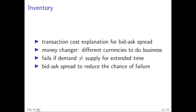Imagine a money changer. In order for him to function, he must have different currencies at hand. Suppose we want to exchange US dollars to euros — he must have both currencies to do business. However, he fails to fulfill his role if demand and supply are unequal for an extended period of time. For example, if many people are buying US dollars with euros, he will accumulate more euros and run out of US dollars, and then he cannot do business anymore. So the inventory model says the money changer would set the bid-ask spread — making the buying price higher than the selling price — in order to reduce the chance of failure.